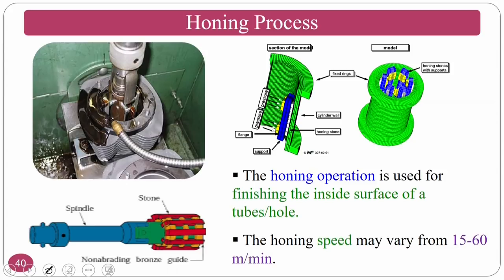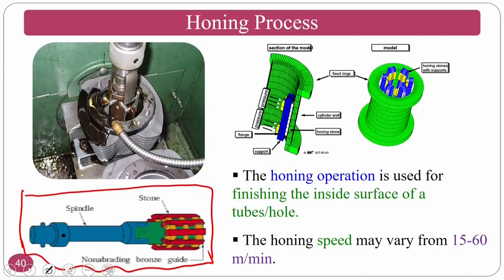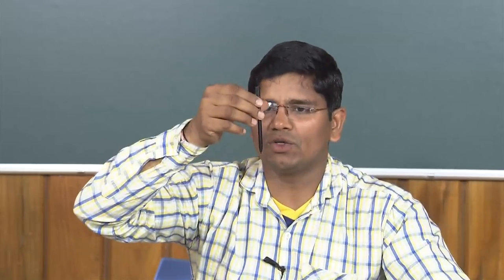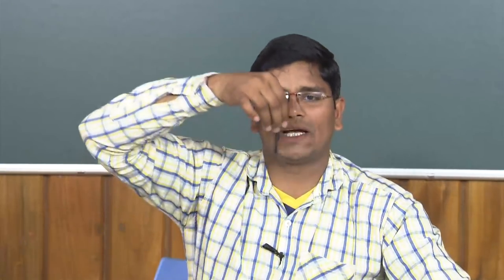Honing is one of the conventional finishing processes where finishing is done by a hone. The machine gives both reciprocating motion and rotary motion to the hone simultaneously, so it moves in a helical path going and coming. This generates crosshatch patterns on the workpiece. The application of honing is in engine cylinders where crosshatch patterns are required along with surface finish.